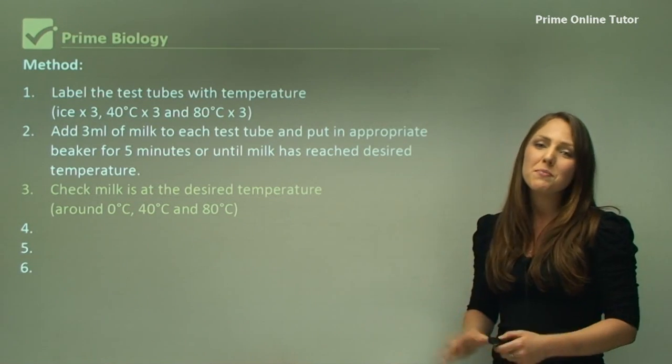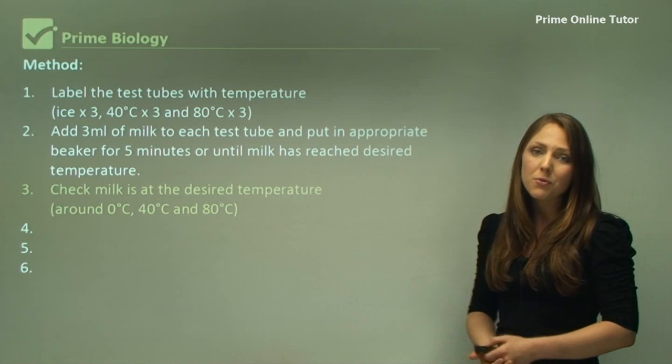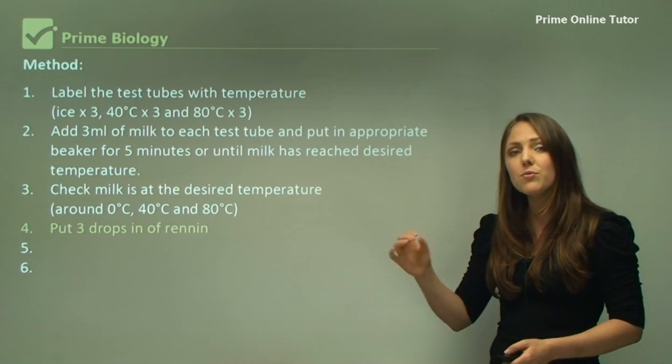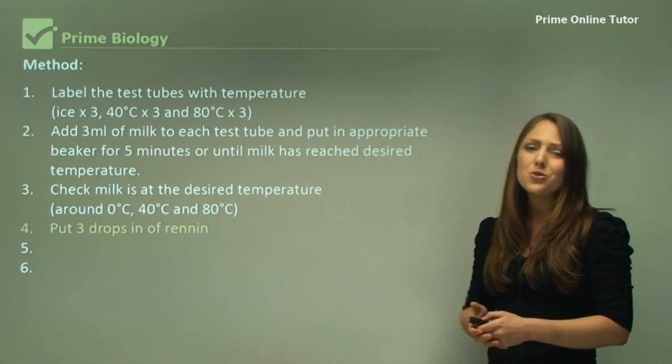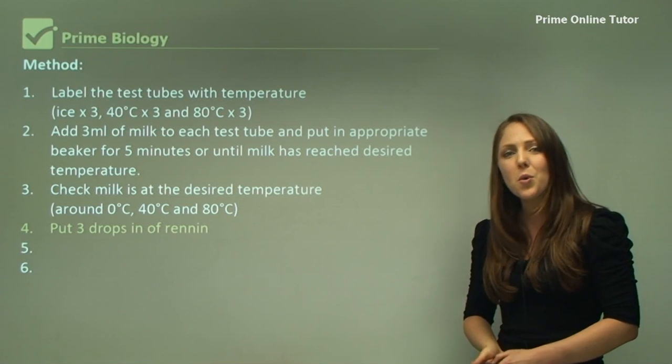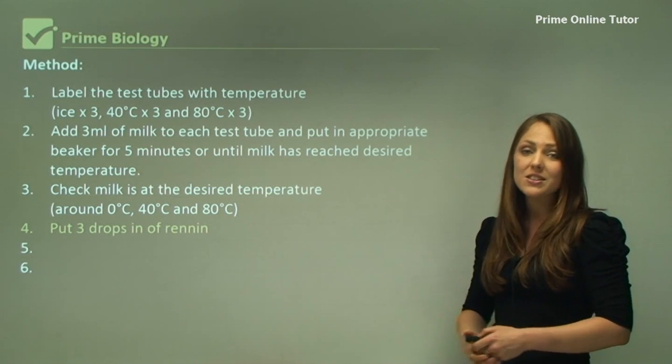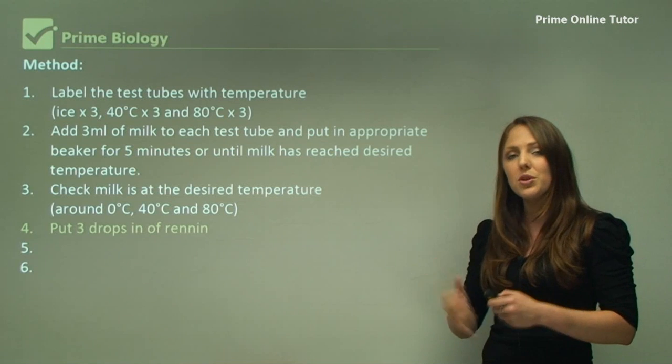You must make sure the milk is at your desired temperature before you put your rennin in. You put three drops of rennin in each test tube, and you try and do it at the same time. If you're working in groups, try and do it together so you can make sure that all of the drops are put in at the same time.